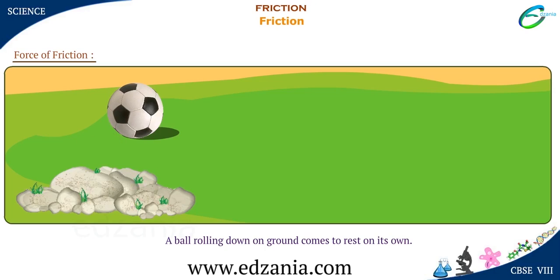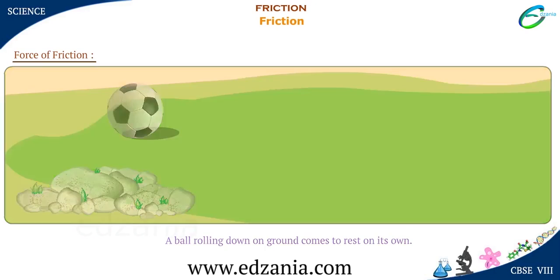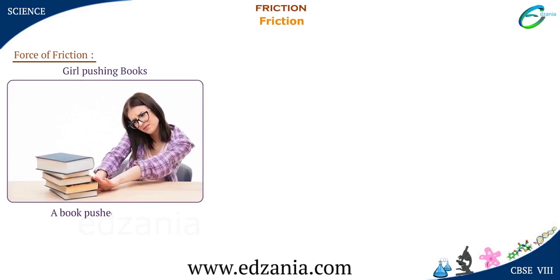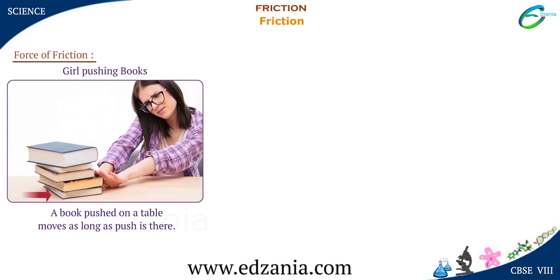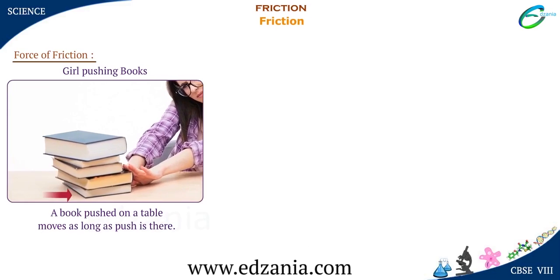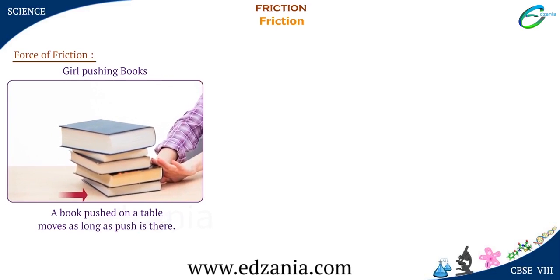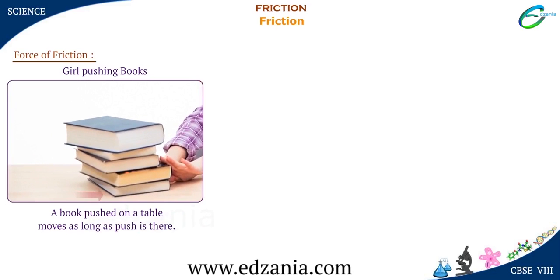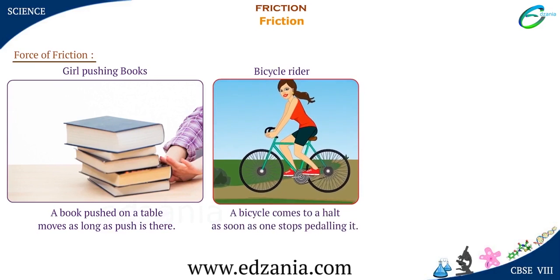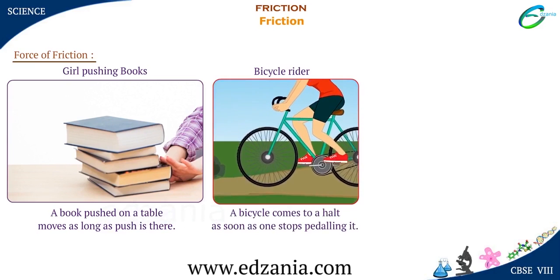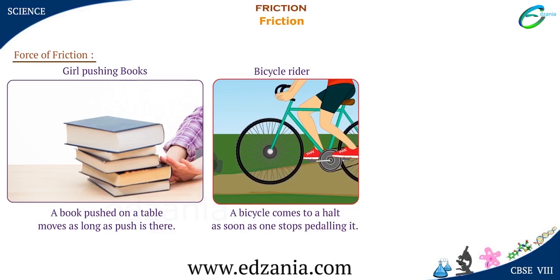Let's see more examples of force of friction. A book pushed on a table moves as long as the push is there. It is the friction between the book and the surface of the table which opposes the motion of the book on the table. A bicycle comes to a halt as soon as one stops pedaling it. It is the friction between the bicycle's tyres and the road's surface which opposes the motion of the tyres on the road.